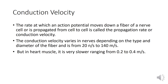Conduction velocity: The rate at which an action potential moves down a fiber of a nerve cell, or is propagated from cell to cell, is called the propagation rate or conduction velocity. The conduction velocity varies in nerves depending on the type and diameter of the fiber, ranging from 20 m/s to 140 m/s. In heart muscle, it is much slower, ranging from 0.2 to 0.4 m/s.